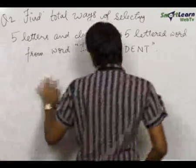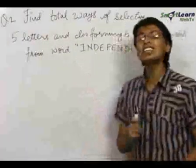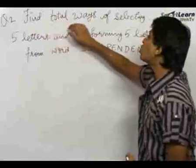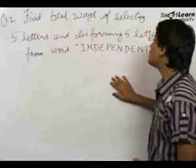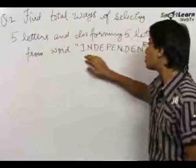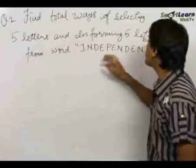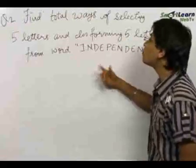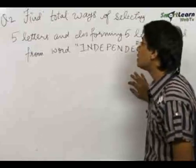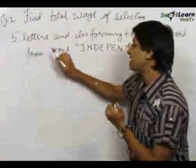The next question is also very important and a highly conceptual problem. We need to find the total number of ways of selecting five letters from the word 'INDEPENDENT,' and also find the total number of ways of forming five-letter words from the letters selected.